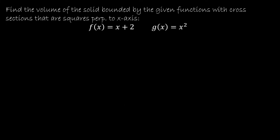Let's start with a fairly straightforward example. We want to find the volume of the solid bounded by f(x) = x + 2 and g(x) = x² with cross sections that are squares perpendicular to the x-axis. Keep in mind that we're dealing with squares, so the formula we're going to use is the area of a square, which is to take the side of the square and square it.